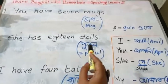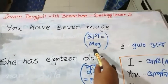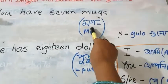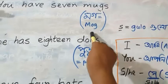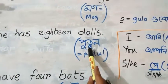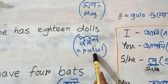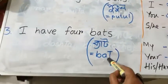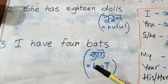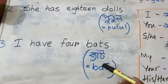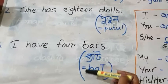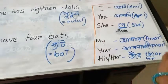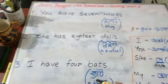I have given the Bangla words already: for 'mug' the Bangla is 'mog,' 'doll' is 'putul,' and 'bat' — note the palatal 't' versus the dental 't' — we try to pronounce it the English way. You are going to use these words for your task. All the best!